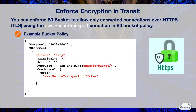Here is an example of the bucket policy to enforce encryption in transit. We've set the effect to deny, and set the principal to anyone using the asterisk wildcard. We've set the action to all S3 operations — such as get object, list objects, and put object — using the asterisk wildcard.